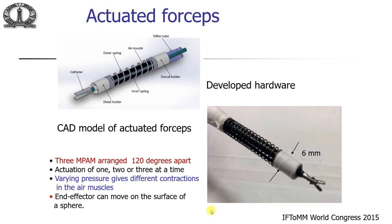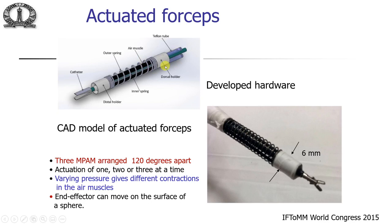Once we have the mathematical model, we use three such tubes arranged 120 degrees apart and made a CAD model of the actuated forcep. There is a holder at each end, and between them are the three artificial muscles. An outer spring helps bring it back when pressure is released, and an inner spring gives stiffness. There is a tube through which air is supplied, and a central channel through which you can send forceps or any other tool.